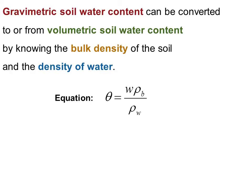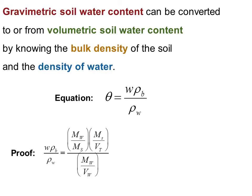And to show why this is true, we can do a quick proof. So if we plug all those definitions from the previous slide into the right side of the equation, this is what we get. And if we take the denominator out to make things a little bit more simple, we can start to cancel out some of these variables, such as the mass of water and the mass of soil solids. And you can see we're left with the volume of water and the total volume, and the ratio of those, of course, is theta, the volumetric water content.